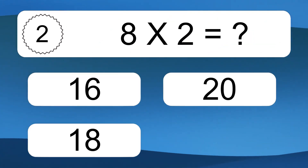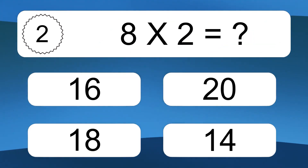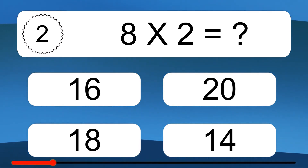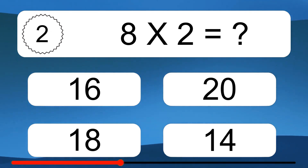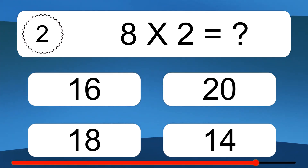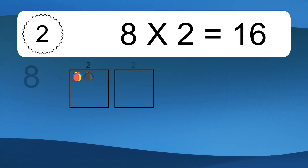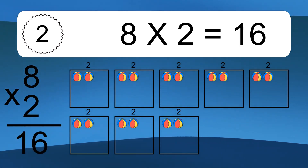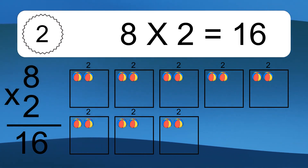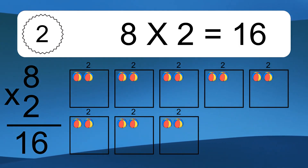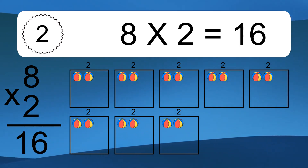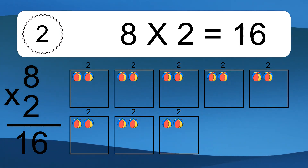8 times 2 equals what? We have 8 boxes, and each box has 2 colorful balls inside. If you count all the balls in all the boxes together, you will have 8 times 2 balls. This equals 16 balls.